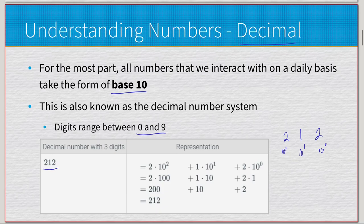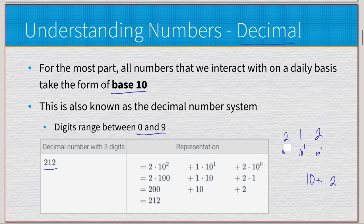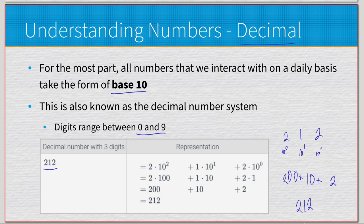So: 2 × 10⁰ = 2, 1 × 10¹ = 10, 2 × 10² = 200. Adding them: 200 + 10 + 2 = 212. If you have a super long number that exceeds what your computer can process, you'd have to represent it as a string. If you needed to work with it, you could break it down to positional notation. Moving on — we have binary, also known as base 2.